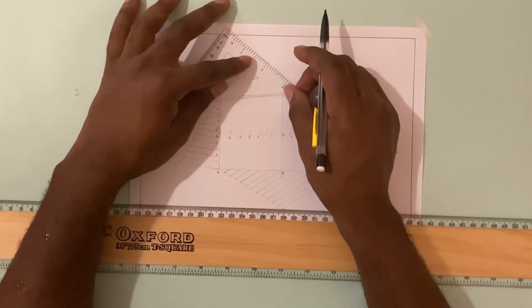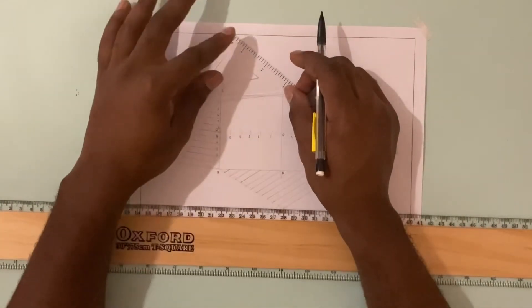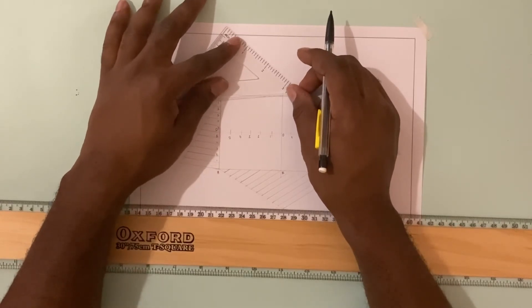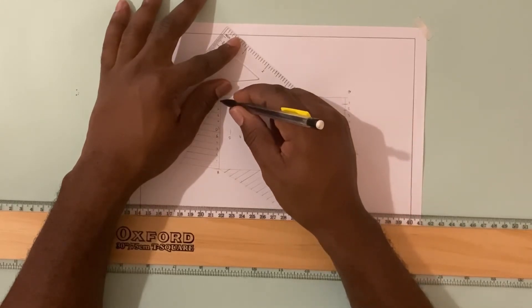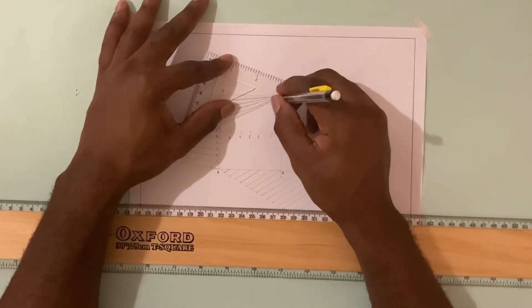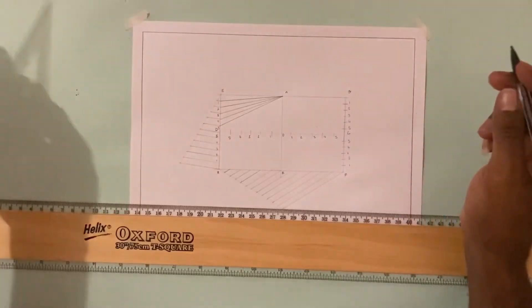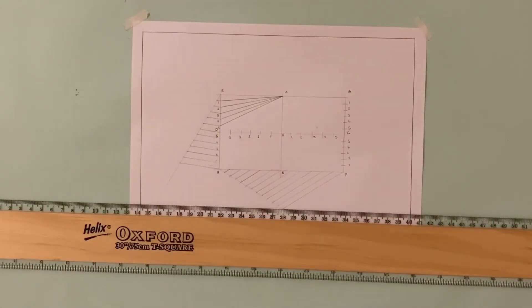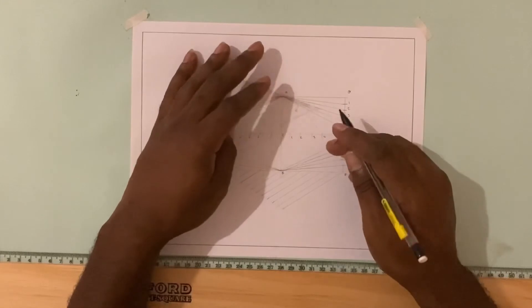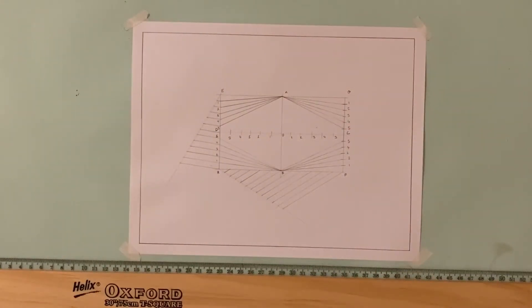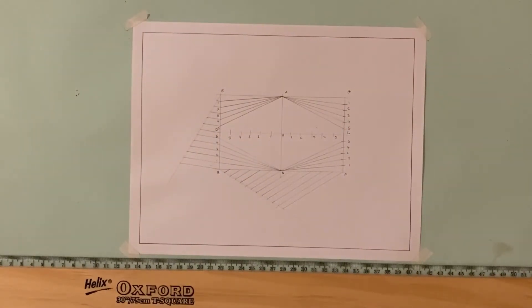Now from point A, I'm going to draw a line from point A to 1. I'm going to do the same on the other side. Now I'm going to continue and do the same thing at B to point 1, 2 through to 5 on both sides.